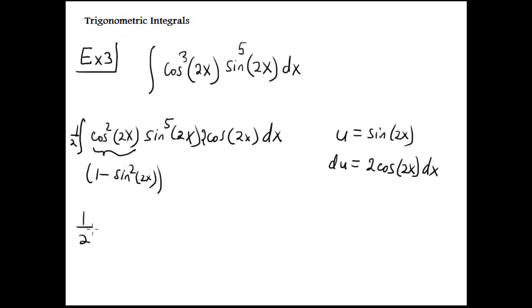Integral one minus u squared. This is u to the 5th and this is one half. You write it to the 5th power here, u to the 5th power minus u to the 7th power.